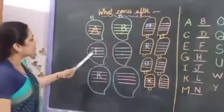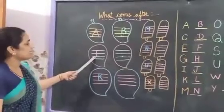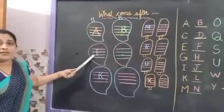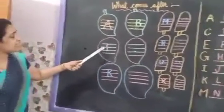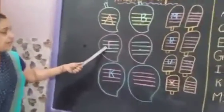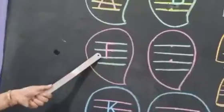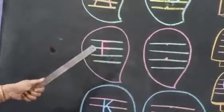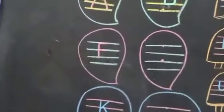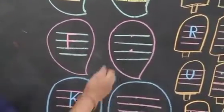B for ball. And which letter is this? F. Which letter is this? F. F for fish.